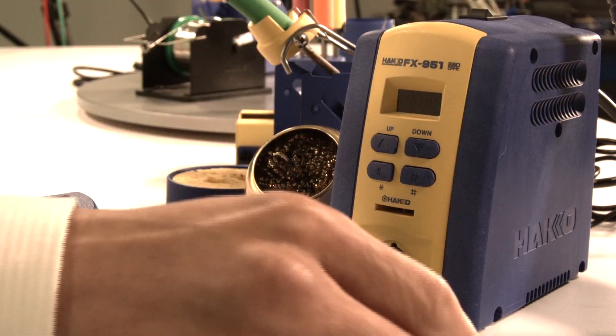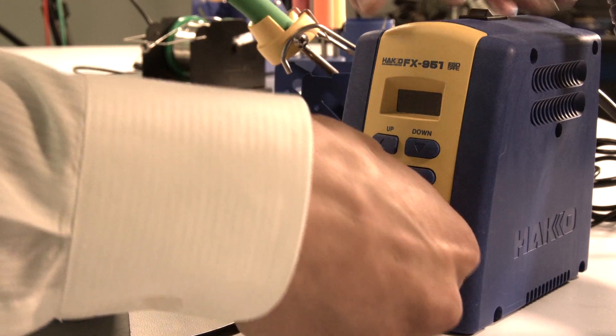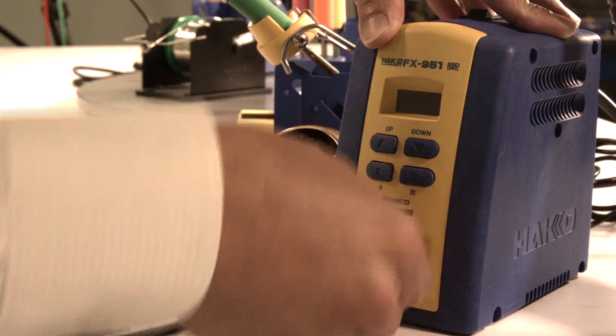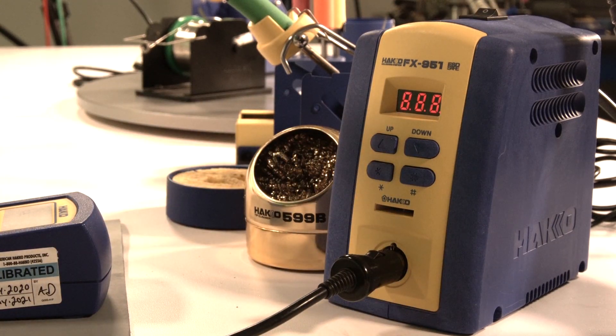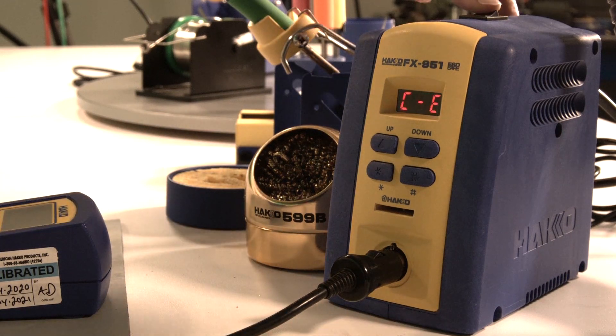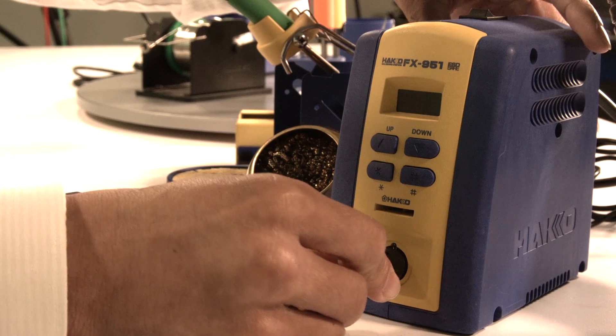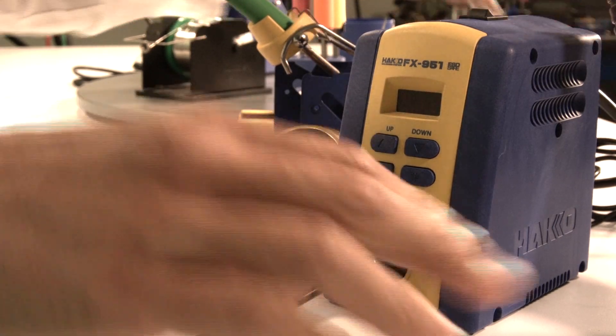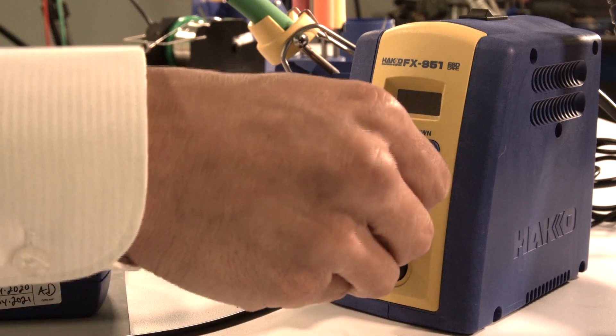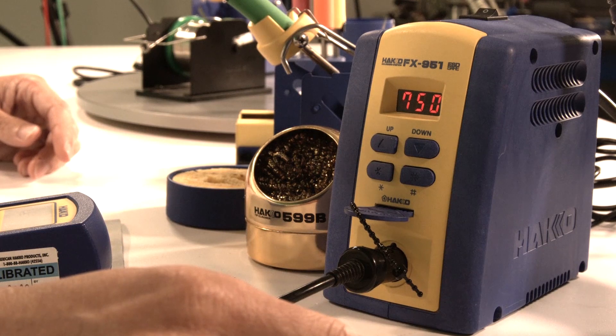Another error message you may come across on your FX-951 is the CE error, which is a connector error alarm. That may happen in cases like this—maybe your connectors for your irons are not properly plugged in all the way into the station. So make sure you check that. Plug them all the way into your station and then turn the station back on. It should get rid of that CE error.